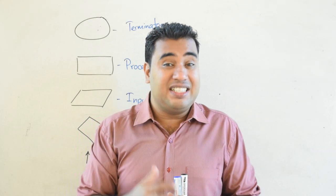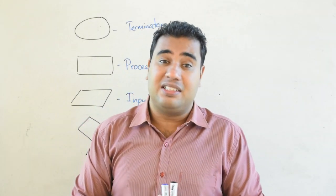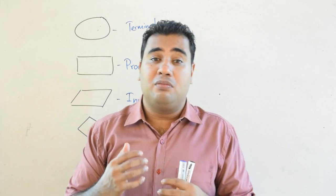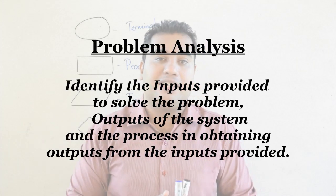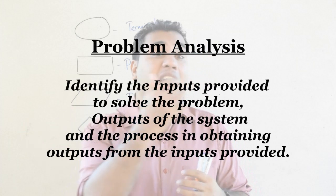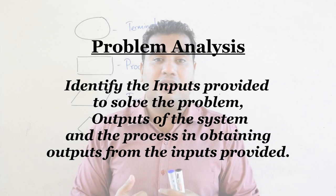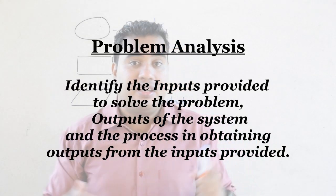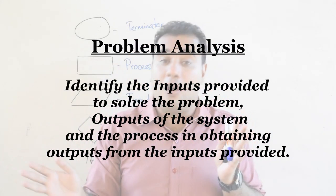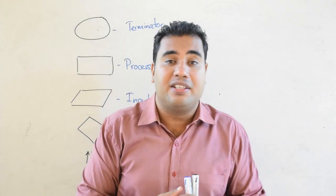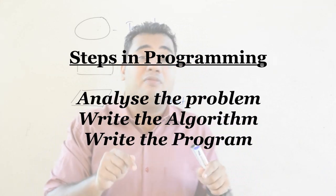The first thing we do when writing an algorithm is analyze the problem. In problem analysis, we identify the inputs we give to the problem in order to solve it. We also identify the outputs we get from the solution, and we identify the process we need to perform to get the outputs from the inputs provided. This is what we call problem analysis, and we do it before designing the algorithm.